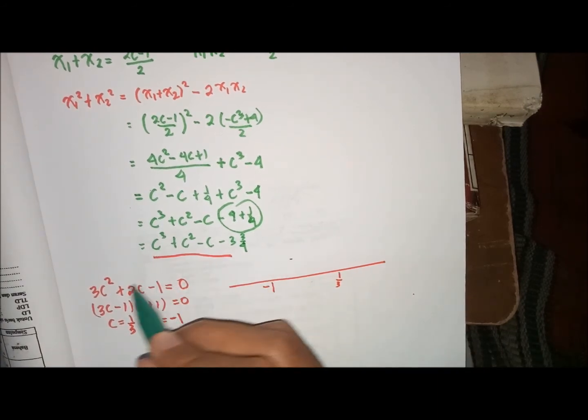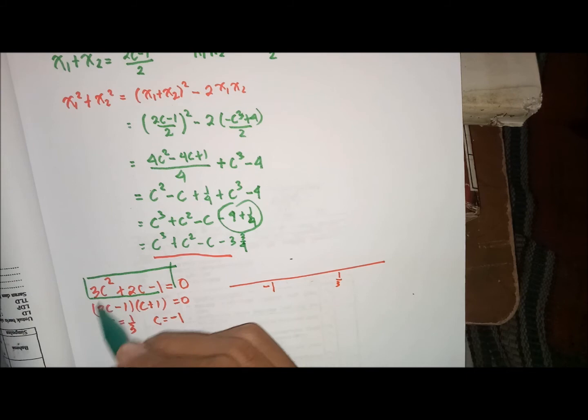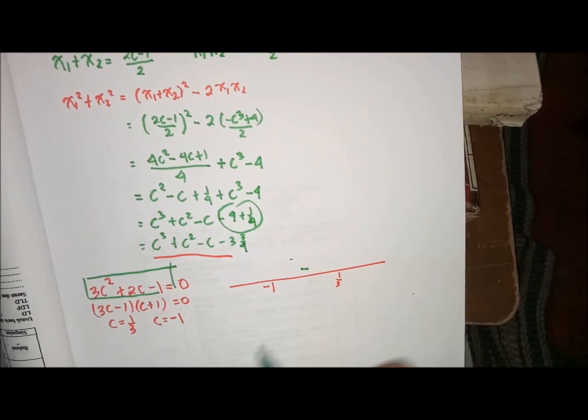0 di sini ketika dimasukkan di fungsi hasil turunan, ini hasil turunan. 3 kali 0, 0. 2 kali 0, 0. Sehingga 0 tambah 0, 0. 2 kurangi 1, min 1. Ketika nilainya 0, C-nya hasil turunannya nilainya min.